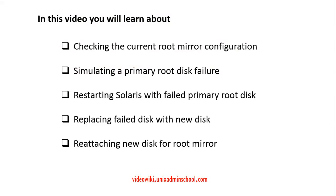In recap, in this video we have seen the procedure to replace a failed primary root disk from an SVM root mirror. We also learned about checking the current root mirror configuration, restarting Solaris with the secondary boot disk, replacing the failed disk with a new disk, and finally recreating and reattaching the root mirror components from the new disk.